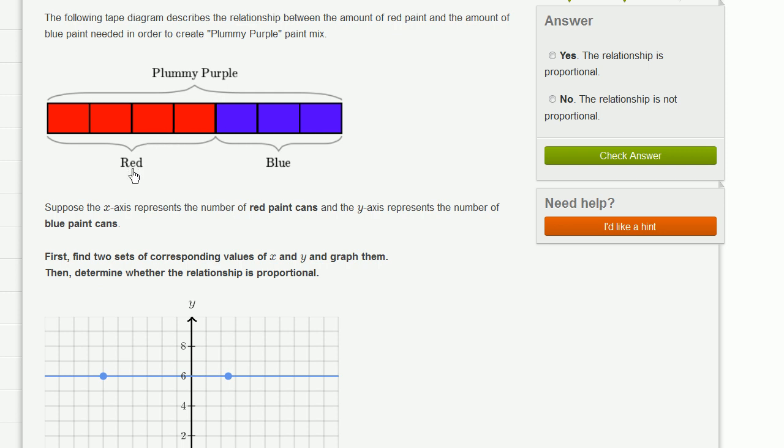You could say that the ratio of red to blue is 4 to 3, or that the ratio of blue to red is 3 to 4. Now they tell us, suppose the x-axis represents the number of red paint cans and the y-axis represents the number of blue paint cans. Let's scroll down a little bit.